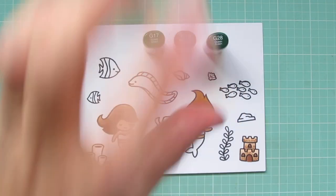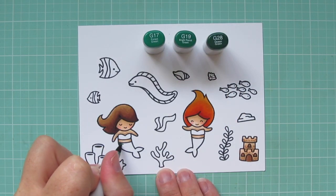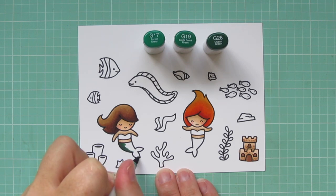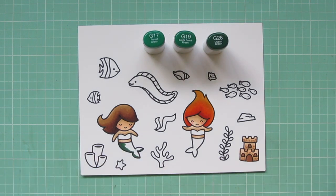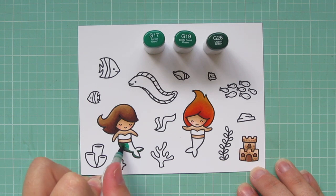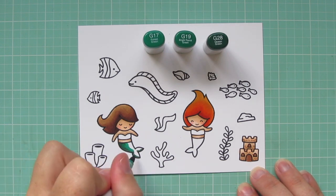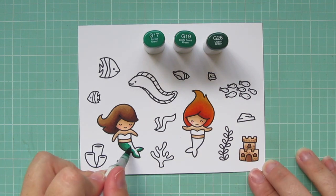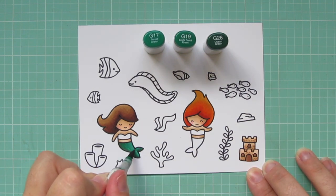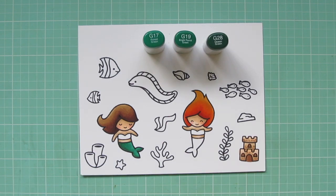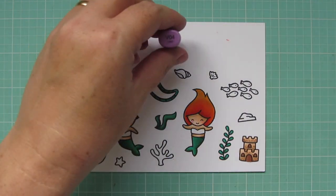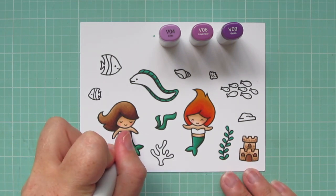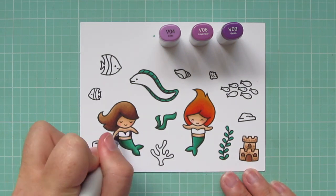For the mermaid's tails, I'm using G17, G19, and G28. So I'm doing a shadow along the left-hand side there, towards the back of her body, and then using the G19 as my midtone, and then blending out with the G17. And then I'll do the other mermaid's tail, and a couple of the sea plants the same. And I also did the fins on the eel.